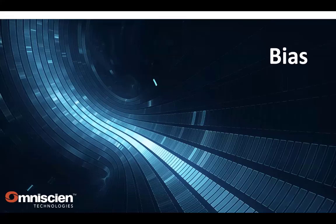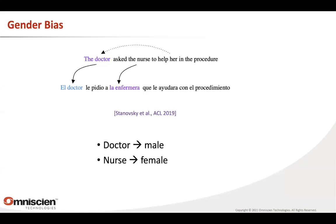Let's move to another topic that has recently gained a lot of attention: the bias that our models exhibit, how we can detect it, and what we can do about it. Here's the classic example: 'The doctor asked the nurse to help her in the procedure.' In English it's not clear if the doctor is male or female, but in the Spanish translation you have to decide on a gender. Since most doctors in the training data are male, the model defaults to a male doctor — even though 'her' in the sentence clearly indicates a female doctor. The model goes by its default preference. The nurse, predictably, gets translated in female form.